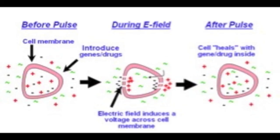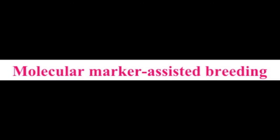Using the electroporation method, successful transformation has been achieved with protoplasts. The thick cell walls of most intact tissues represent the key physical barriers to electroporation. Marker assisted selection is an indirect selection process where a trait of interest is selected not based on the trait itself but on a marker linked to it. The markers are sequences of nucleic acid located near the desired gene and transmitted by the standard laws of inheritance.